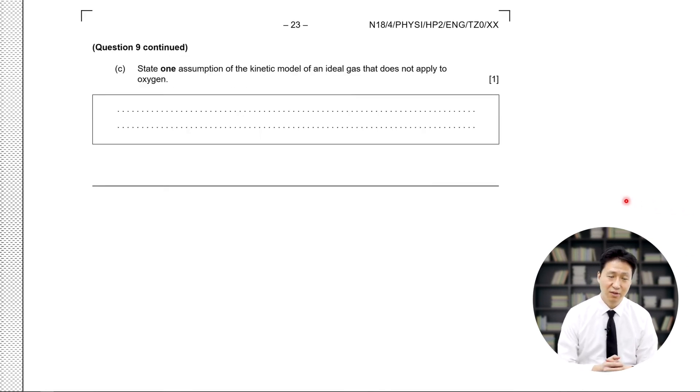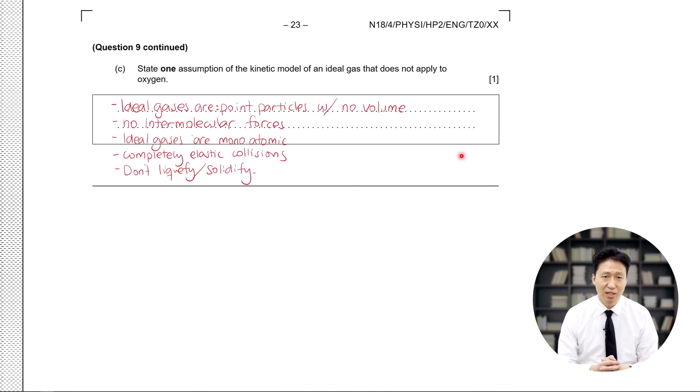Last part of this question says state one assumption of the kinetic model of an ideal gas that does not apply to oxygen. There are a lot of things we can answer. We only need one because this is a one-point question. First, ideal gases are point particles with no volume, whereas the oxygen is a particle with a volume. Another possible answer is that ideal gases assume there are no intermolecular forces, while oxygen does have intermolecular forces.